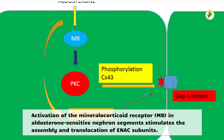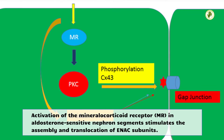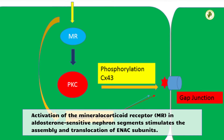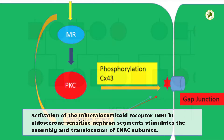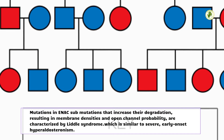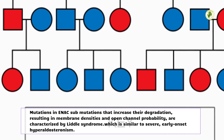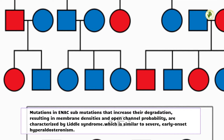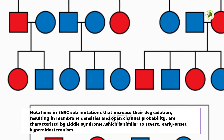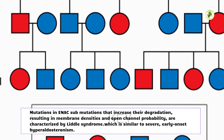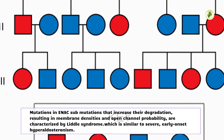Activation of the mineralocorticoid receptor (MR) in aldosterone-sensitive nephron segments stimulates the assembly and translocation of ENaC subunits. Mutations in ENaC subunits that increase their membrane density and open channel probability are characterized by Liddle syndrome, which resembles severe, early-onset hyperaldosteronism.